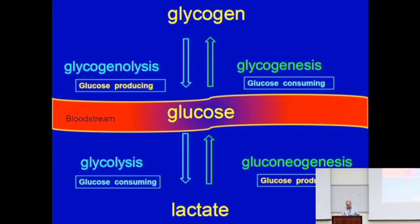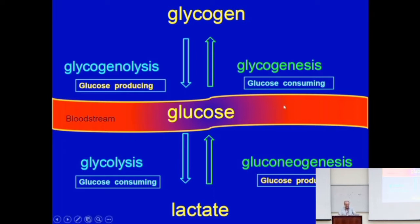One of the most important functions in the body is the maintenance of serum or plasma glucose. You don't want it to go too high, you don't want it to go too low — hyperglycemia or hypoglycemia. Maintenance of blood glucose drives a lot of processes, and we just talked about how hormones, signal transduction, and receptors are how blood glucose is maintained through the action of specific hormones.